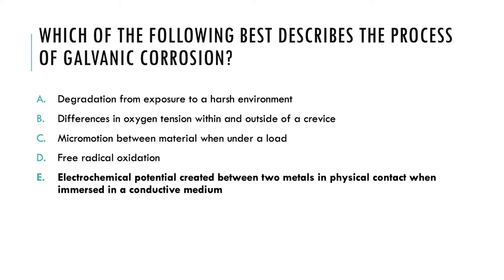If you chose E, you were correct. Galvanic corrosion is not limited to a harsh environment — cold or hot temperatures will not cause it, so A is eliminated. Answer B is wrong because galvanic corrosion is caused by an electrochemical difference, not just oxygen tension, and it can happen on a surface, not just in a crevice. Answer C implies mechanical forces causing galvanic corrosion, which is not true — it is an electrical or electrochemical reaction. Finally, galvanic corrosion is not caused by free radical oxidation; oxidation corrosion and galvanic corrosion are two different types. The correct answer is E: the electrochemical potential created between two metals in physical contact when immersed in a conductive medium.